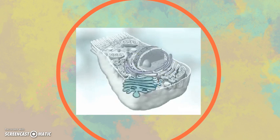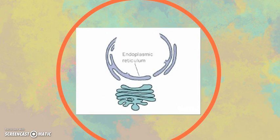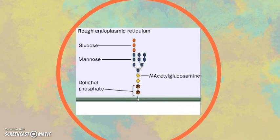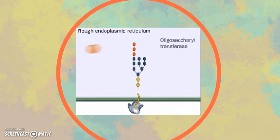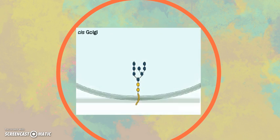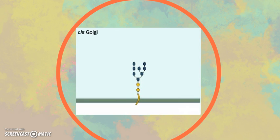Glycosylation — adding sugars to proteins — begins in the endoplasmic reticulum and continues in the Golgi apparatus. For one protein: enzymes in the ER remove glucose and mannose residues from the oligosaccharide chains. Vesicles then transport the glycoprotein to the cis-Golgi network, where one of two events occurs.